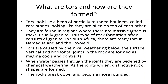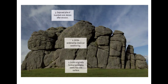The cooling and contraction cause the rocks to have vertical and horizontal joints. When water passes through the joints, they are widened by chemical weathering. As the joints widen, distinctive rock shapes are formed. The rocks break down and become more rounded — that is how the tors are formed.